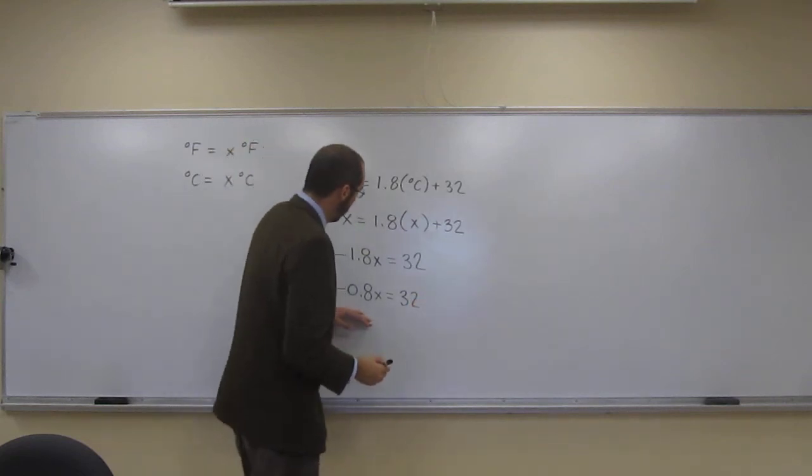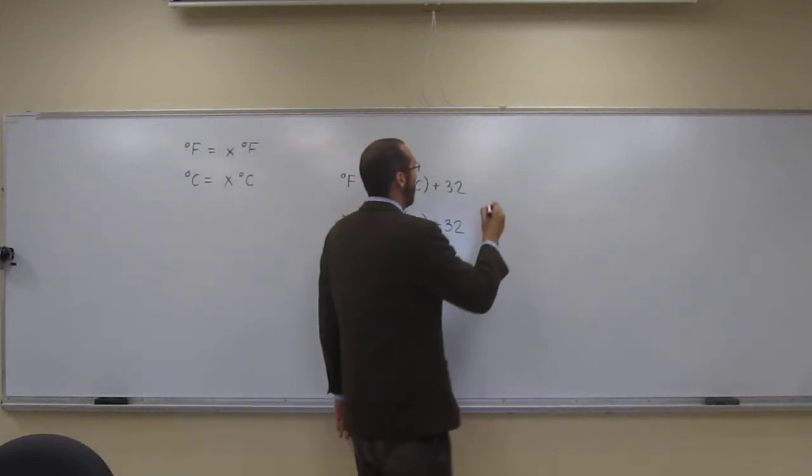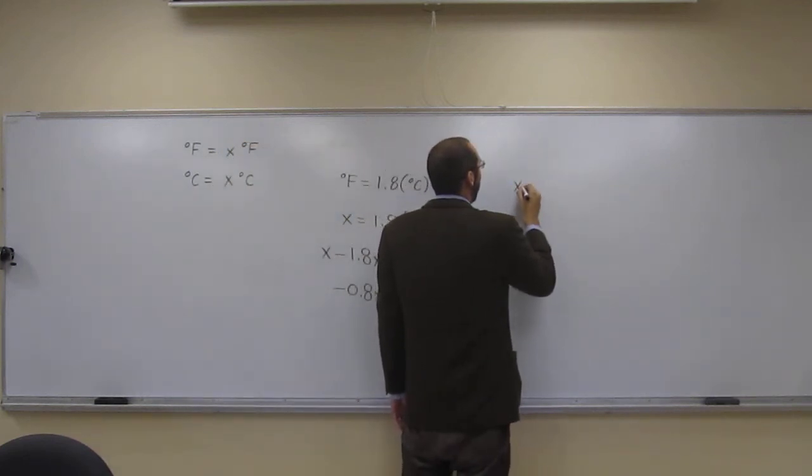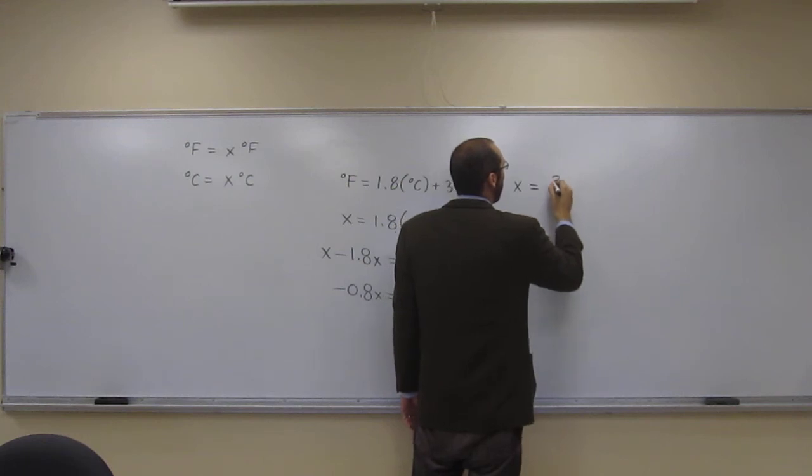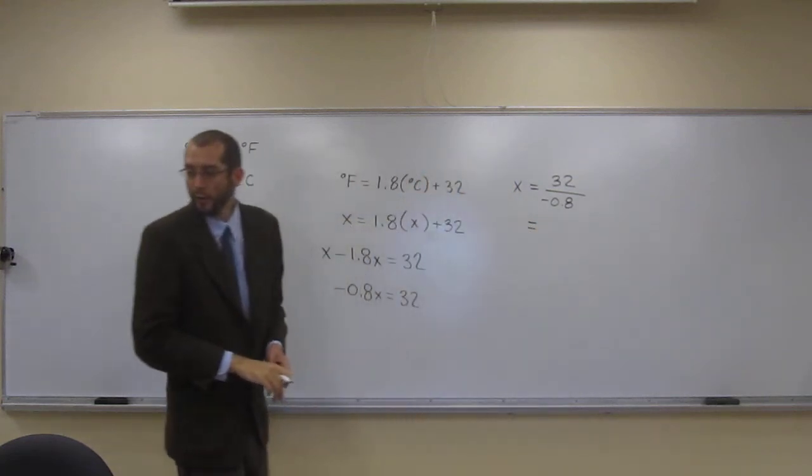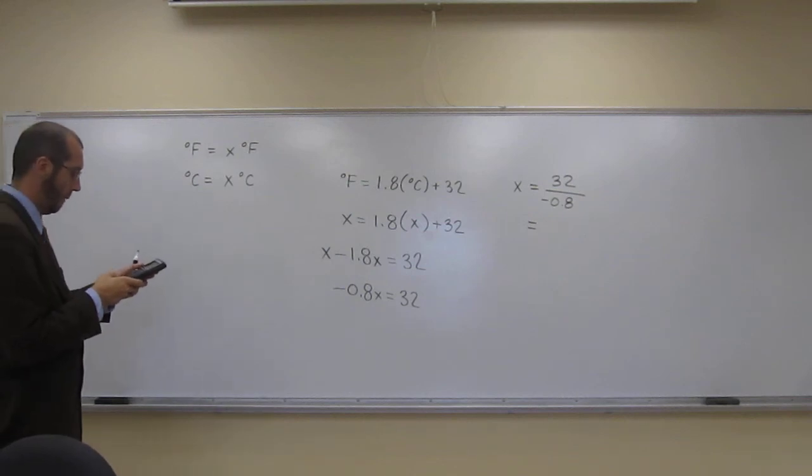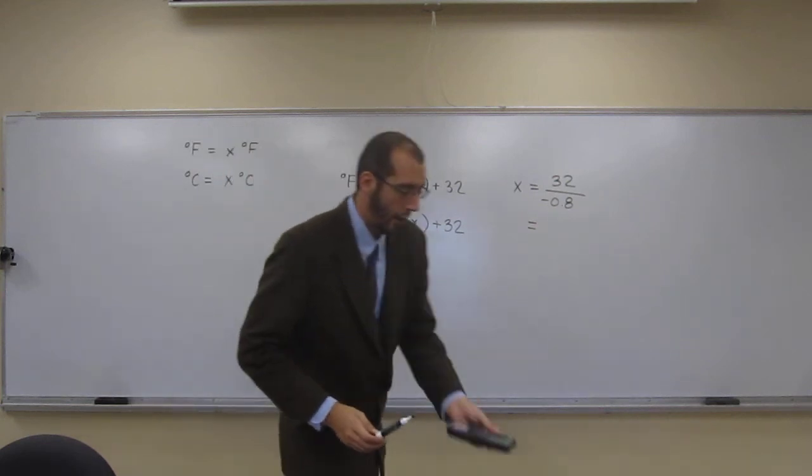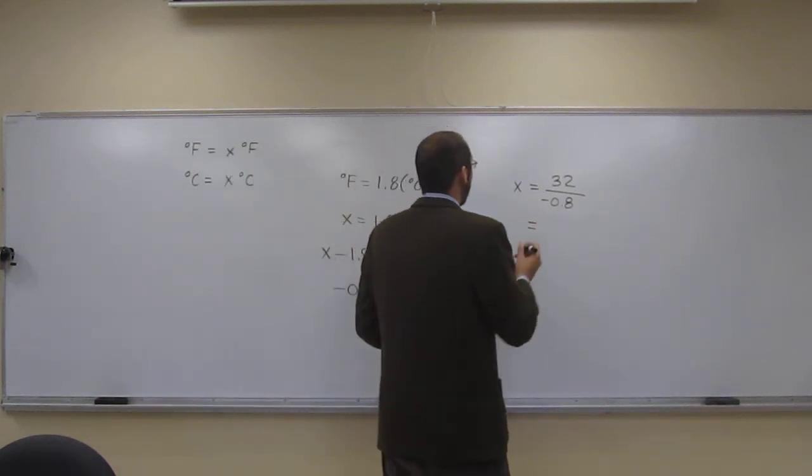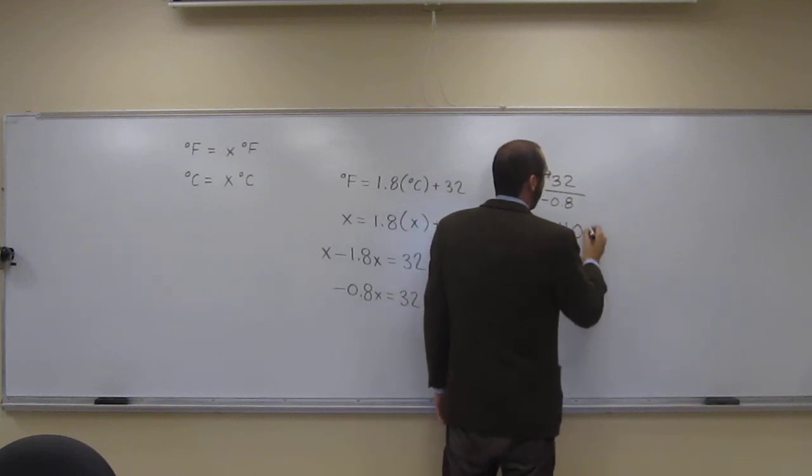And then what we're going to do is divide both sides by negative 0.8. So x is going to equal 32 divided by negative 0.8. And that should give us the answer. So 32 divided by negative 0.8, and I get negative 40 degrees.